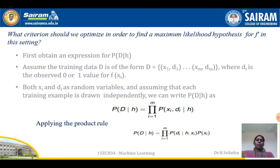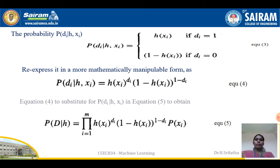We can write the posterior probability P(D|h) as the product: P(D|h) = product from i=1 to m of P(xi, di | h). Applying the product rule, P(D|h) = product from i=1 to m of P(di | h, xi) times P(xi).